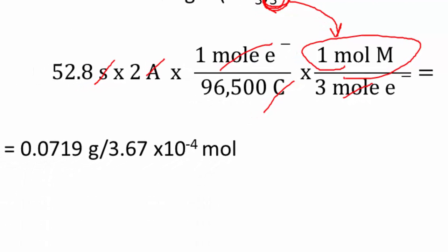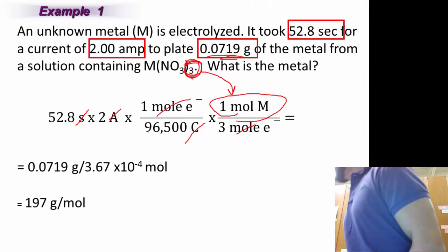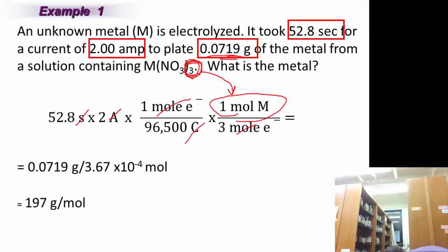So I'm going to do that and then I'm going to find the metal. And from this I found the molar mass of the metal. See if you can figure out what this metal is. Where would you look? Hopefully you would look at the periodic table. What metal has that molar mass?